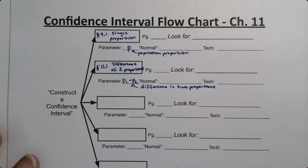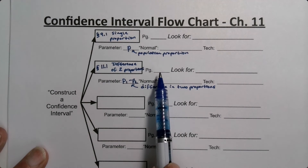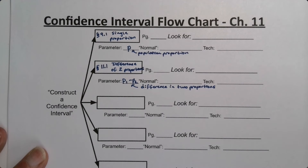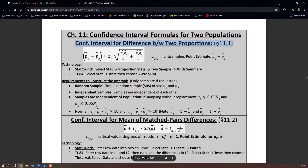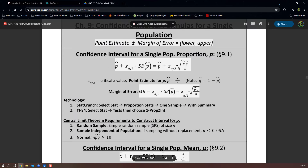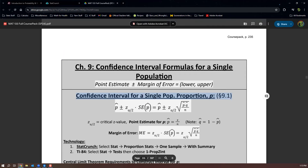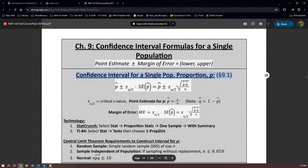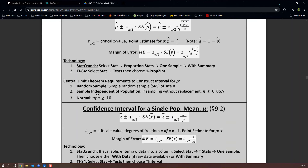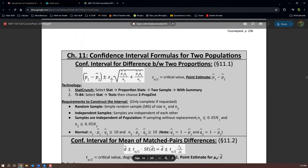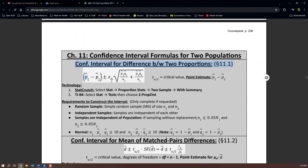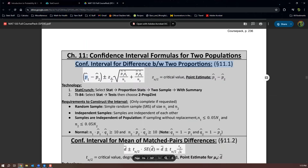For page numbers, look in your exam notes packet and fill them in yourself. Find whatever page has the section 9.1 confidence interval piece. For me it's currently on page 235, but that changes from semester to semester. The section 11.1 formula will be on the next page right after it — they're both the top boxes in their respective pages.